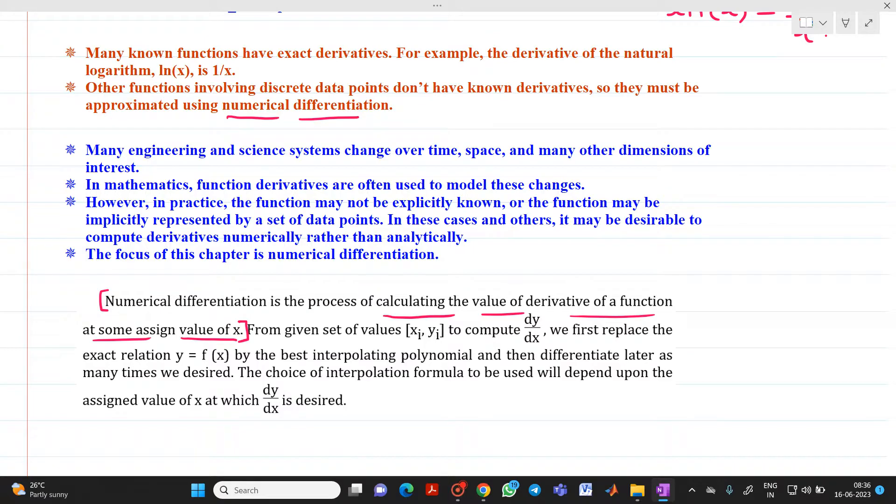Let's say we will have some data of x and y. So based on that, suppose we have to find it out what will be the derivative at some exact data point at exact value of x. From a given set of values, x i and y i, in order to compute dy by dx, first we have to replace exact relation y equal to f of x by best interpolating polynomial and then differentiate later as many times we desire. The choice of interpolation formula which is to be used here will depend upon assigned value of the x at which dy by dx is designed.